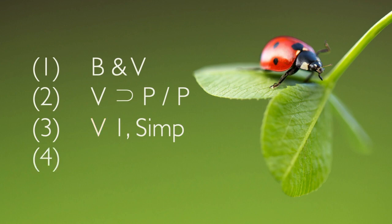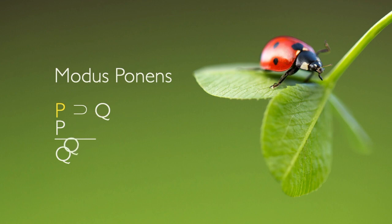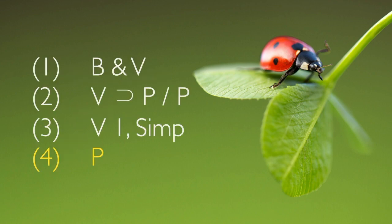Let's create line four and look for a new inference to make. Up here in line two it says if v, then p. And here in line three it says v. Well, so p. That form of reasoning is called modus ponens. It says if you have a conditional on one line, and you have the antecedent of that conditional on another line, you can go ahead and break off the consequent and put it on a new line. So here in line four, we infer p. We got that p from line two, and it was line three that allowed us to do it — because two says if v, then p, and three says v. So obviously p. That's modus ponens.